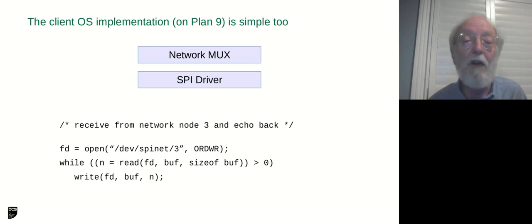And the corresponding OS layers are simply a multiplexer, which takes all the network device references and shares the SPI interface to the on-chip network, and then the actual SPI driver that does the handshaking communication.